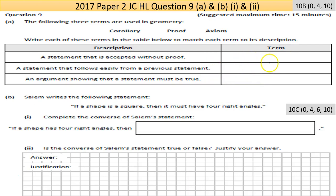So you've a chance getting these right by just guessing, but obviously we try to get as good a guess as possible. First one here says 'a statement that is accepted without proof' - so it's self-evident or obvious. Second one is 'a statement that follows easily from a previous statement.'